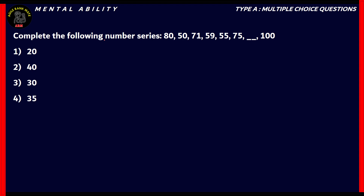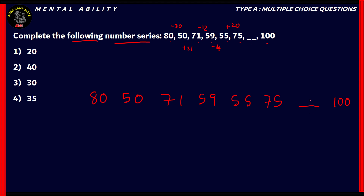Let's look at another question: Complete the following number series — 80, 50, 71, 59, 55, 75, ___, 100. If you look at the differences between adjacent numbers: −30, +21, −12, −4, +20 — these differences do not form a consistent series. So we need a different approach to identify the pattern.